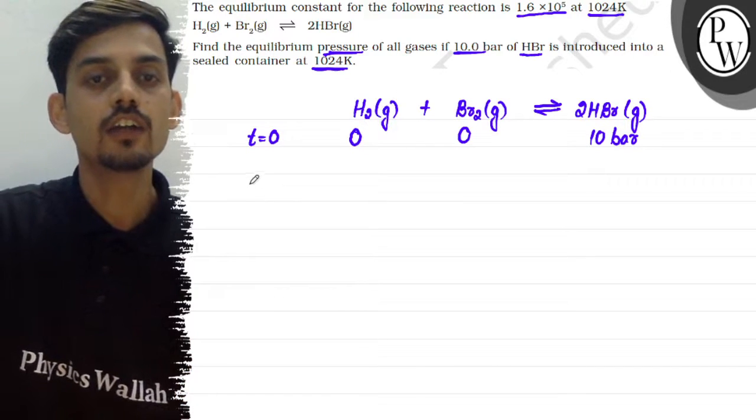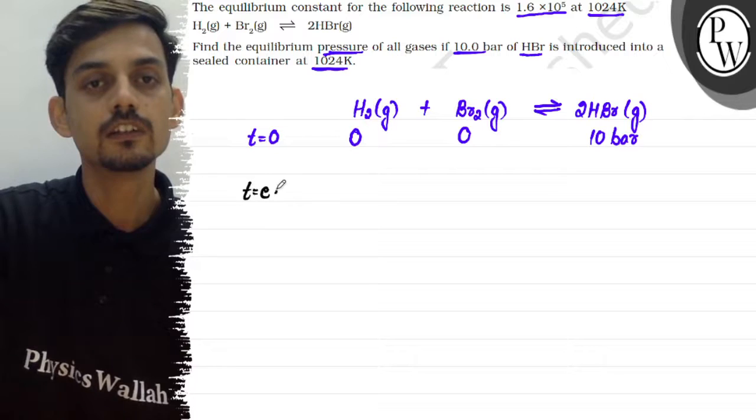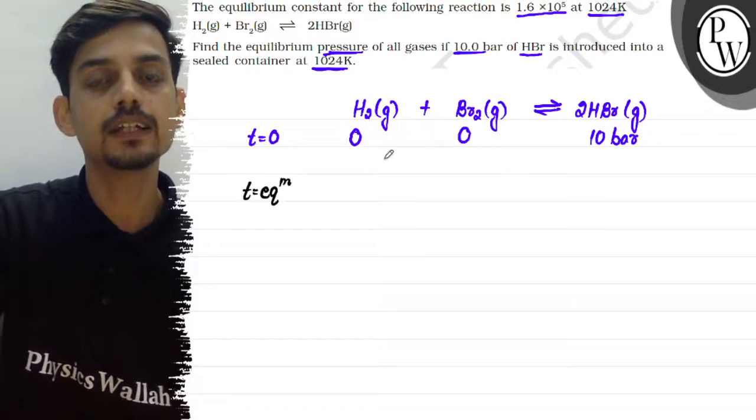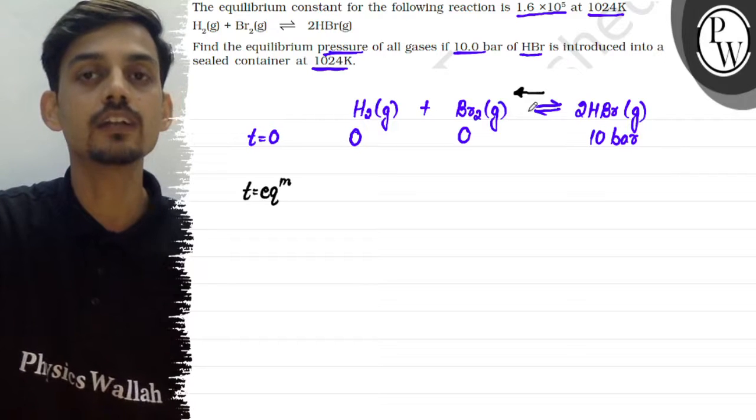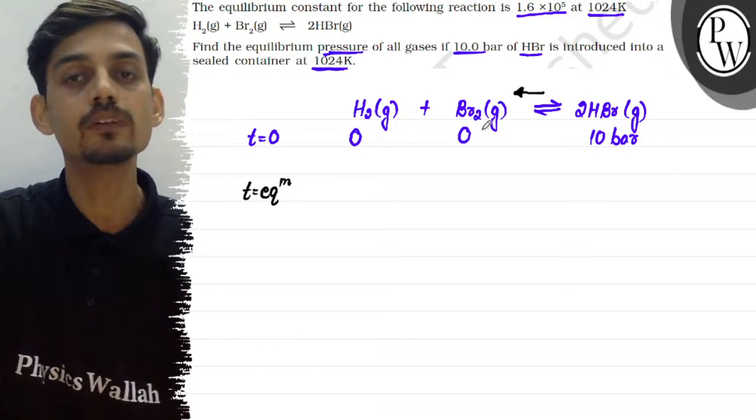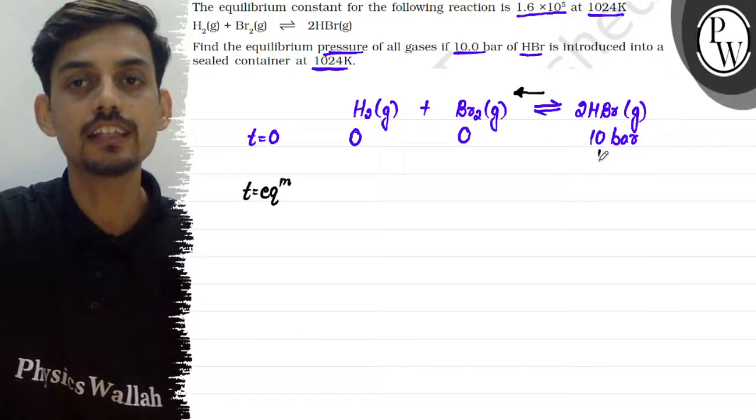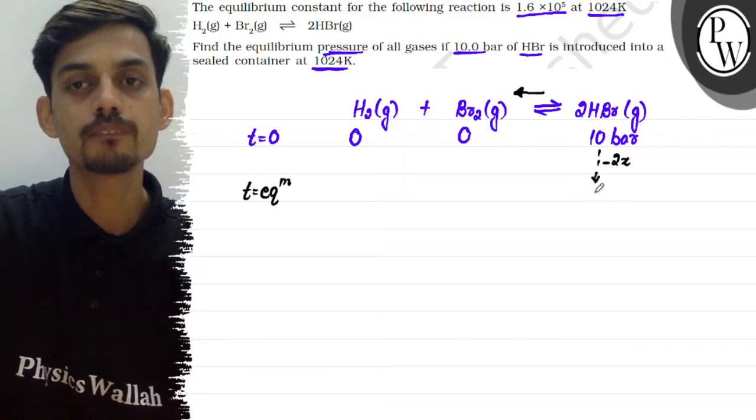Since the reactants are initially 0, the reaction will proceed in the backward direction to reach equilibrium. We can assume 2x amount of HBr dissociates, so the remaining pressure will be 10 - 2x.